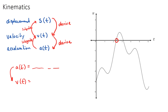The object only changes direction at the point where velocity goes from negative to positive — that's when it stops going backwards and starts going forwards. A common IB exam question asks how many times the object changes direction. Many students count every peak and trough, but the object only changes direction when velocity crosses zero from negative to positive, which happens only twice here.